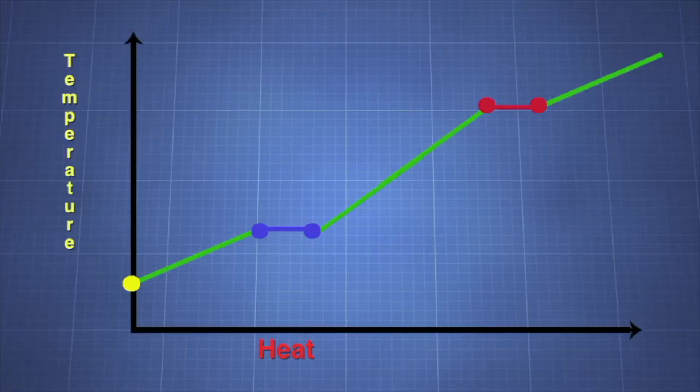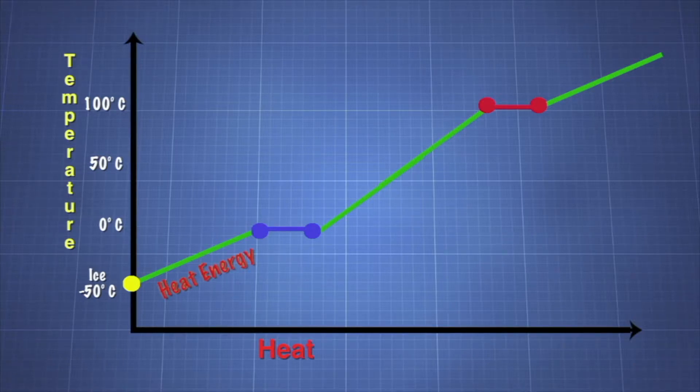Again, the heat of fusion does not involve a temperature change during the phase change. Consider ice at minus 50 degrees Celsius. When heat energy is added, the temperature goes higher until it gets to 0 degrees Celsius, the melting point.